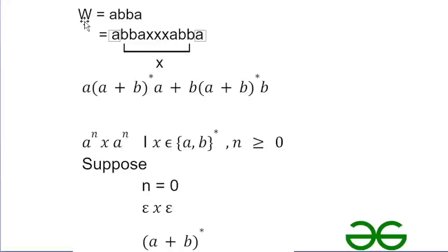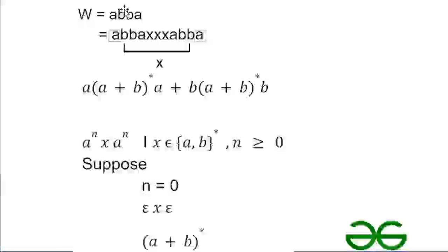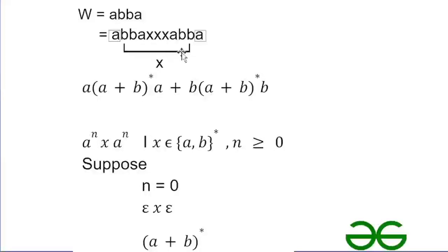I have taken w = abba because we can take any combination of a and b as w. Now we will put the value of w in the language. So the input string will become abba, then x in the middle, ending with the reverse of this string, that is abba.